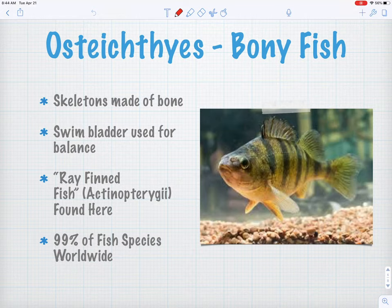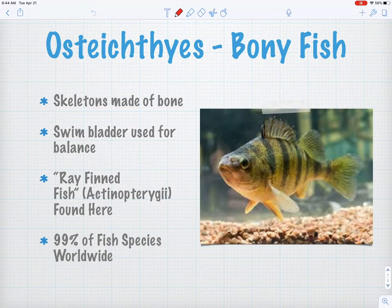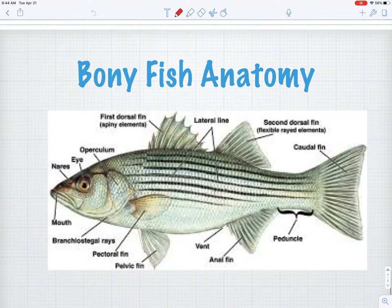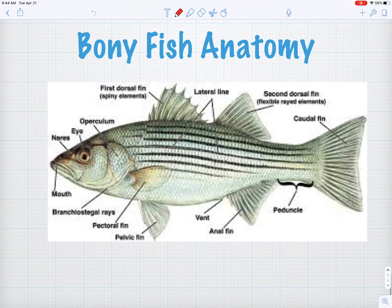Finally, our Osteichthyes — our modern fish — are things like that yellow perch you see there. Any bony fish: the shiners, trout, salmon, bass, and things we think of as fish in freshwater around here in Maine are all bony fish, Osteichthyes. They have true bones, and 99% of fish species worldwide belong to class Osteichthyes. Just a brief overview of the three different classes of fish.